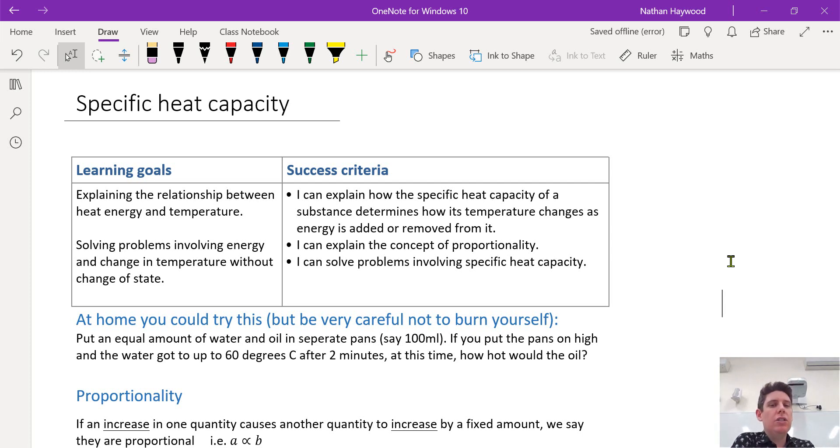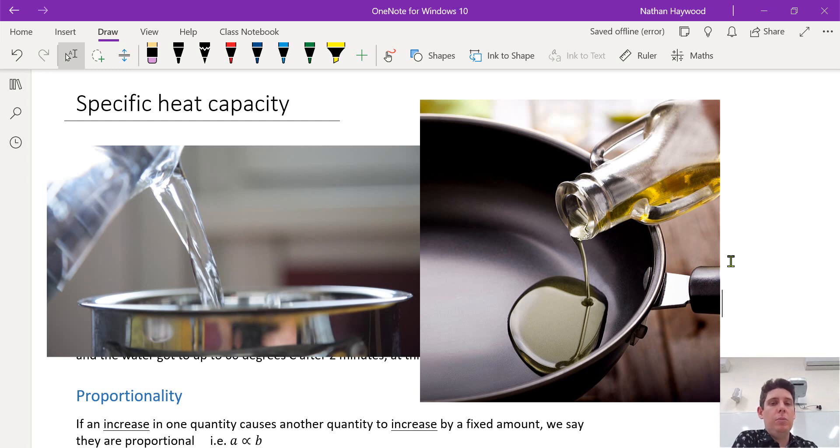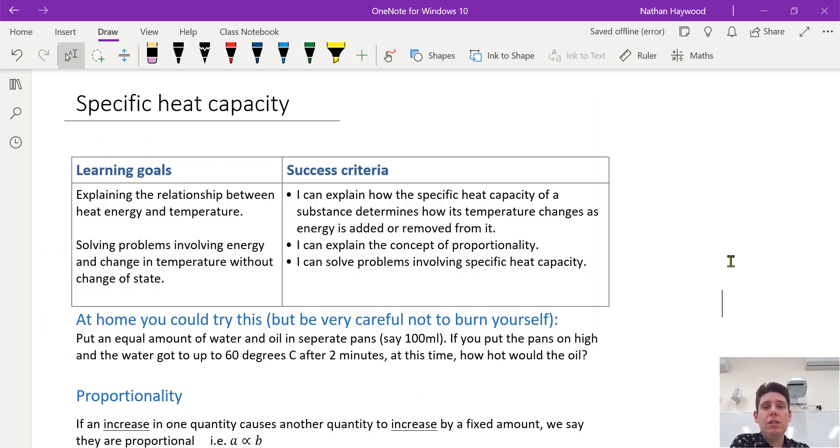You could do an experiment to test this further. Say you get some oil and some water, put them into separate pans on a stove. You put a hundred mils of oil and one hundred mils of water. You turn your stove up to medium heat on both pans. What will happen after two minutes? Let's say the water got to 60 degrees Celsius and the oil will get to what? Will it be the same temperature?